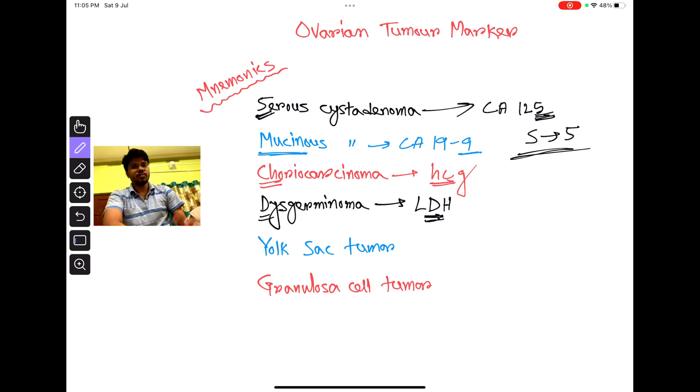Now yolk sac tumor marker is AFP, alpha-fetoprotein. Alpha-fetoprotein.